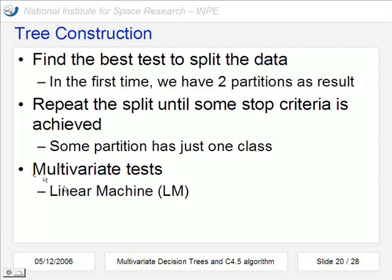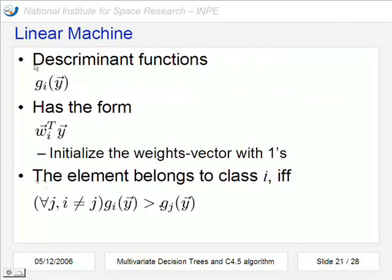And an approach to make this construction is called linear machine. What is linear machine? It is a set of discriminant functions. Here are them. And has this form. We perform a sum with this weight vector and this attributes vector. At the first time we can initialize this vector just with 1. And to say that some element belongs to class i, we can say that for all other discriminant functions, this function is higher than all of them.